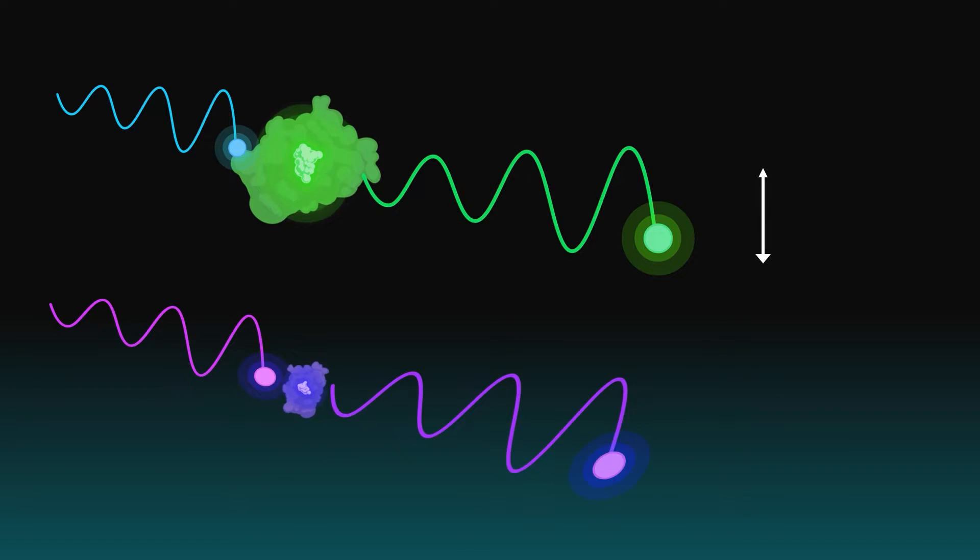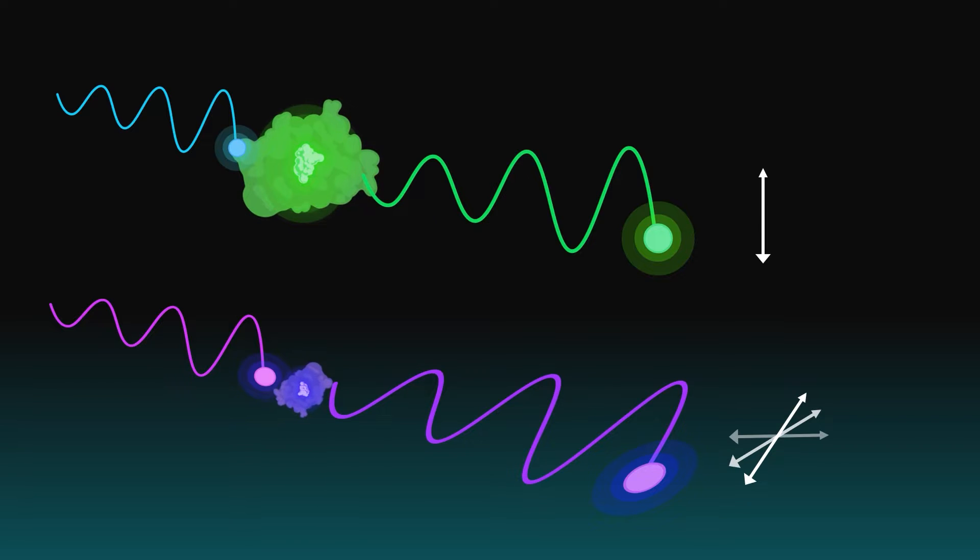If the molecule is small, rotation and movements are fast. So when the small molecule is excited by polarized light, the emitted light is depolarized in all directions.